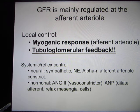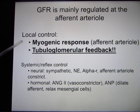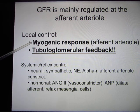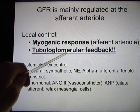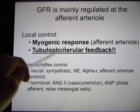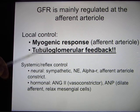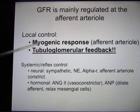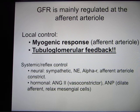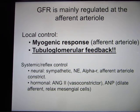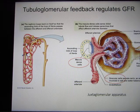You have two local controls: one is called the myogenic response, which happens in the afferent arteriole. The second one is called tubuloglomerular feedback. We'll mainly talk about these two. You also have systemic regulation, but let's look at local regulation first.